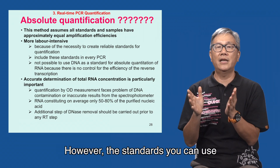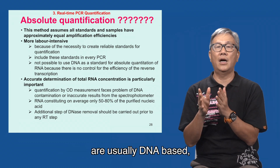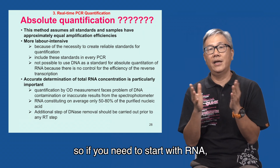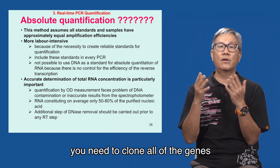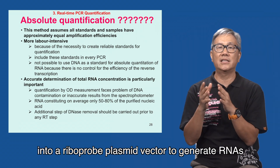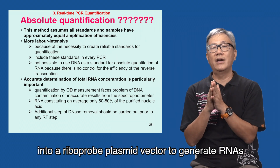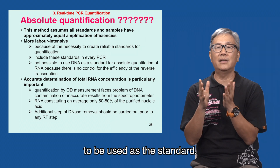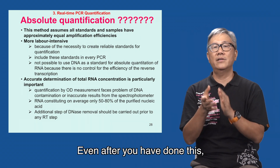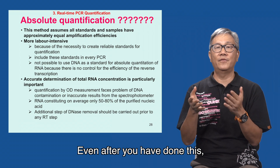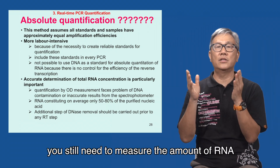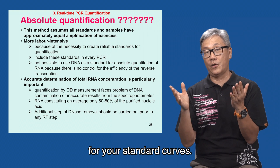However, the standards you can use are usually DNA-based. So if you need to start with RNA, you need to clone all of the genes into a riboplasmid vector to generate RNAs to be used as the standard. Even after you have done all this, you still need to measure the amount of RNA for your standard curves.